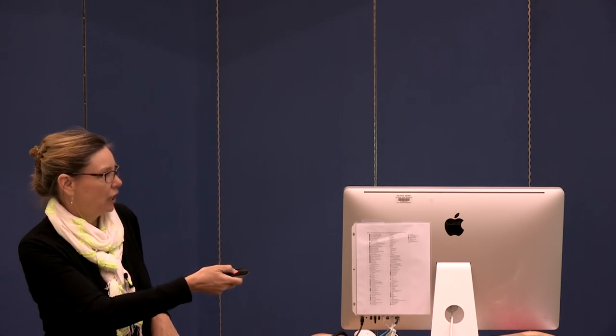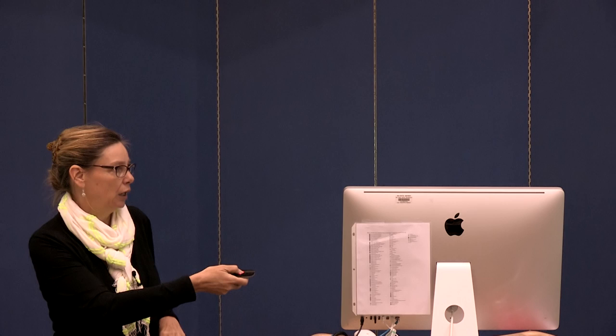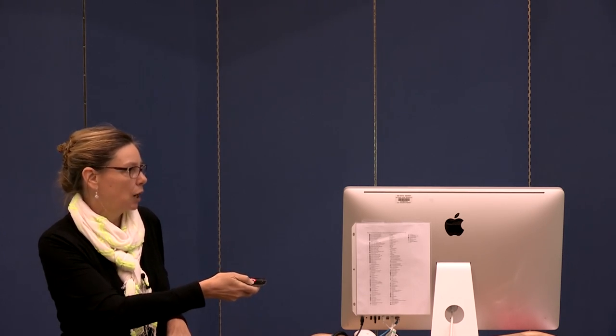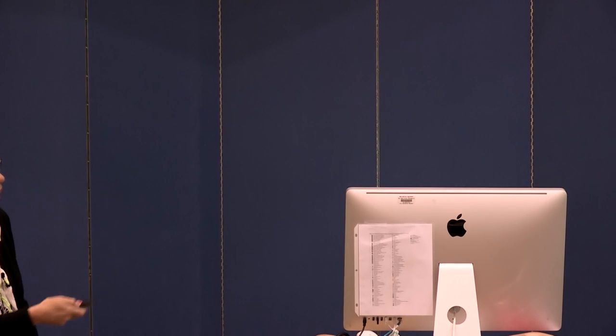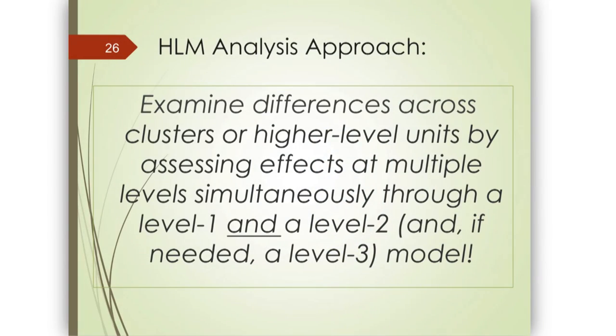In all three of those examples, we were looking at differences across clusters or higher-level units by simultaneously modeling relationships at level 1 and level 2, or level 3 for three-level models. The idea for HLM is to model all of those relationships simultaneously at the same time.